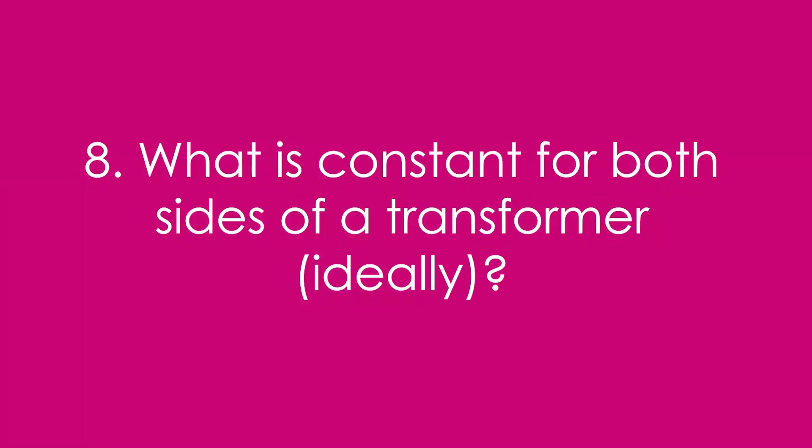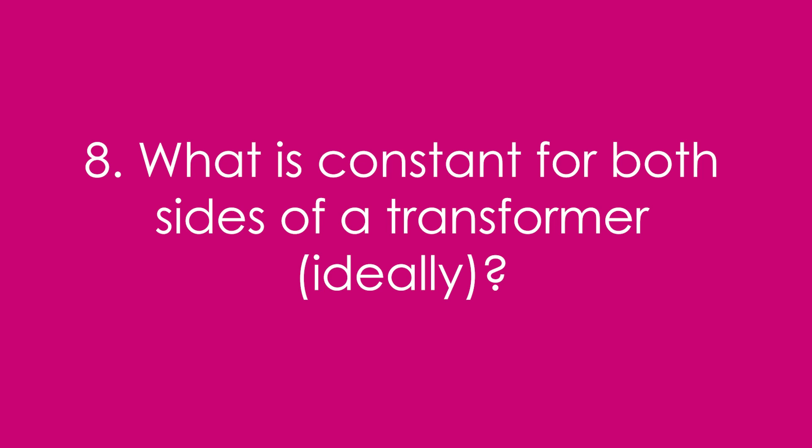Question 8: What is constant for both sides of a transformer, ideally? Power. We know power equals voltage times current, so V₁I₁ should equal V₂I₂ for the primary and secondary coil.